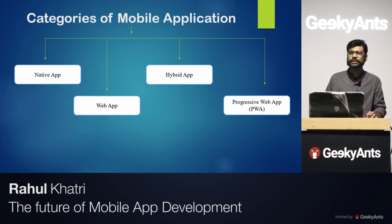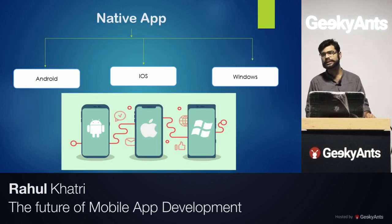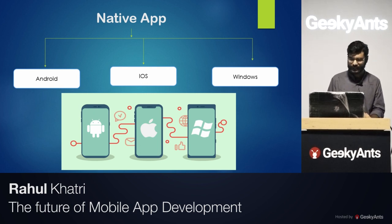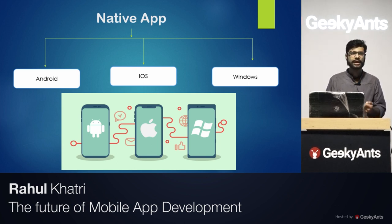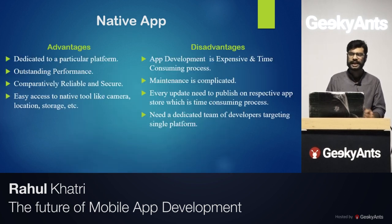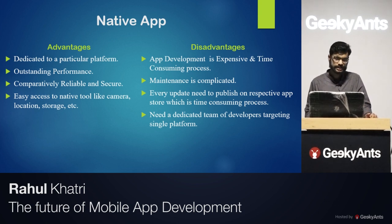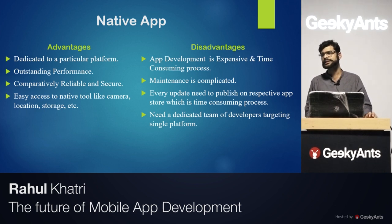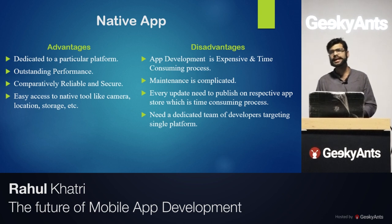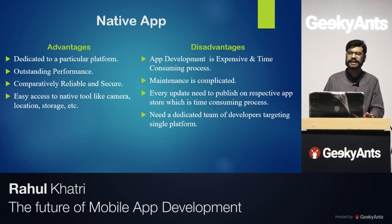I'll give a brief description of all four. First, native apps are built for a particular platform, like Android, iOS, or Windows — they are dedicated to a single platform. Their advantages include being fully dedicated to the platform, so they can easily use native components like the camera, location, or storage.